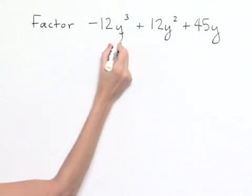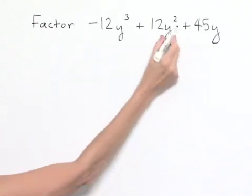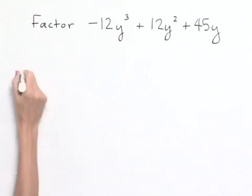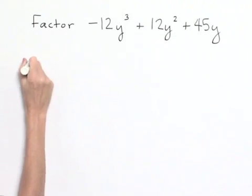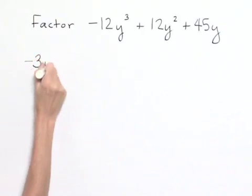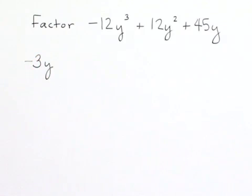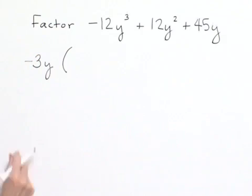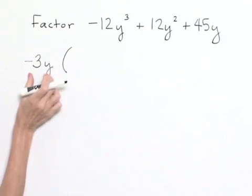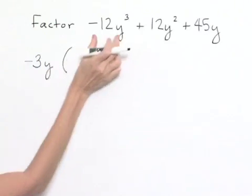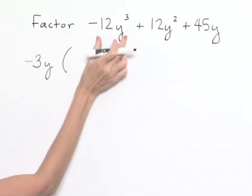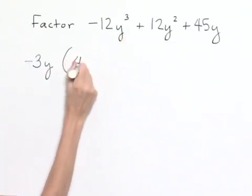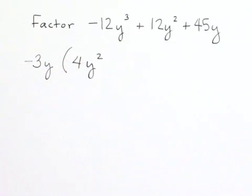We also note that y cubed, y squared, and y share a common factor of y, leading us to factor out a negative 3y from all three terms. If we take negative 3y and need to get back to negative 12y cubed, we would need to multiply by 4 and then by y squared.